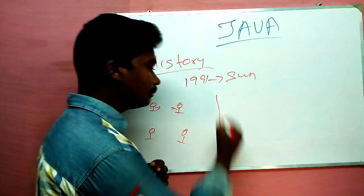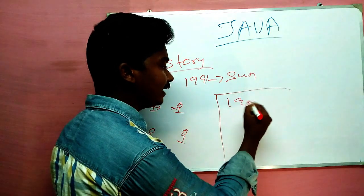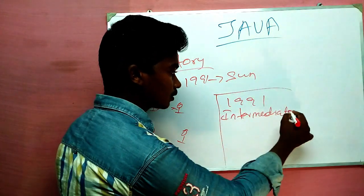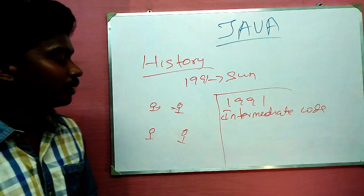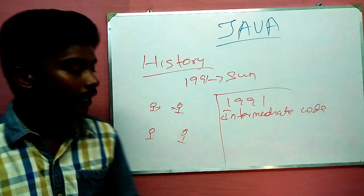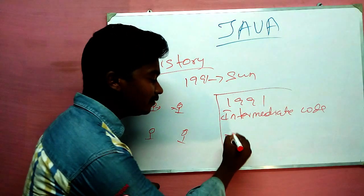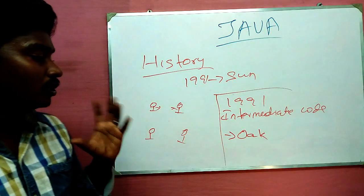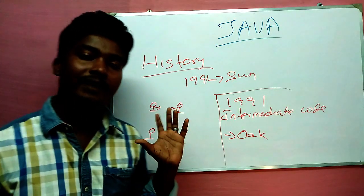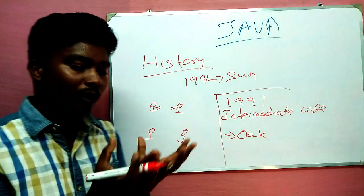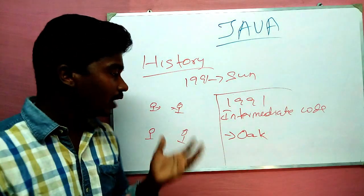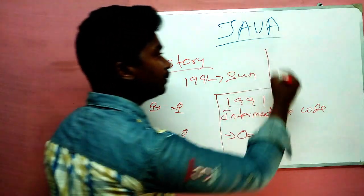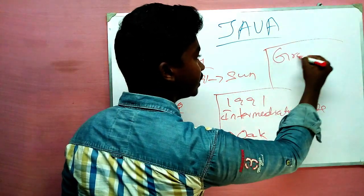When this programming language was made, they used pure object-oriented programming. They also created an intermediate code. They developed a project and named it the Green Project.